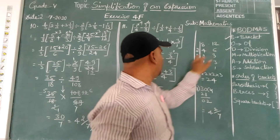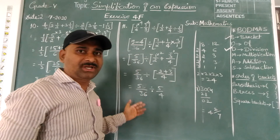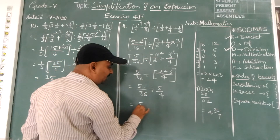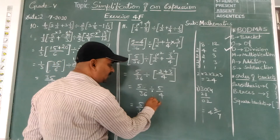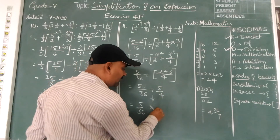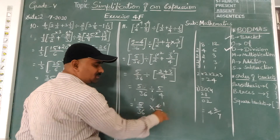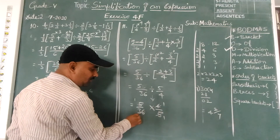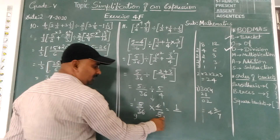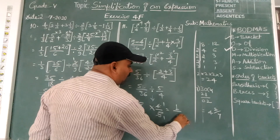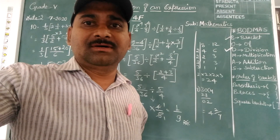Now brackets are simplified. The next operation is division — there is no 'of'. So 5/36, keeping first fraction as it is, change the sign, and write the reciprocal of 5/4, which is 4/5. 5 ones cancel, 4 nines are 36 — leaving 1 one is 1 in the numerator and 9 ones is 9 in the denominator. So 1/9 is the simplified answer.